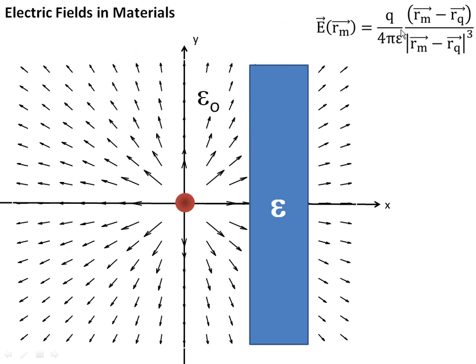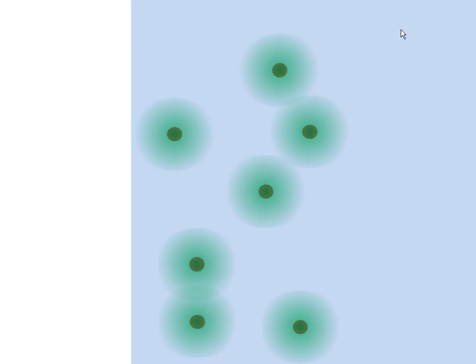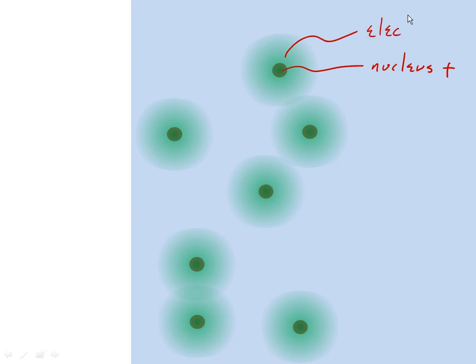In order to better understand this, we need to zoom in — get a microscope and zoom in very closely to look on the scale of the individual atoms or molecules that make up this material. If we zoom in far enough and take a somewhat simplistic view, we know this material is made up of individual atoms or molecules. At the center of each of these atoms and molecules, there's a nucleus, and this nucleus is essentially going to have a net positive charge, surrounded by a cloud of electrons.